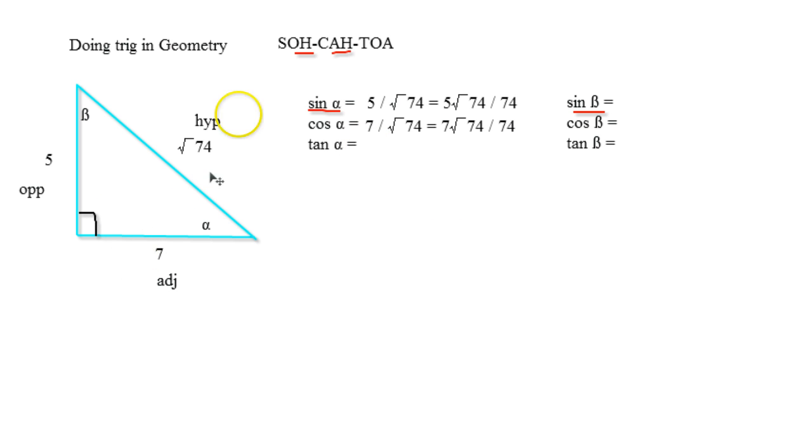Now tangent of alpha is going to be really easy. It is going to be the opposite over the adjacent. So opposite's right here, adjacent is right here. So that's just going to be really easy. That's going to be 5 over 7.